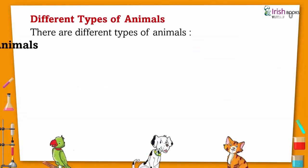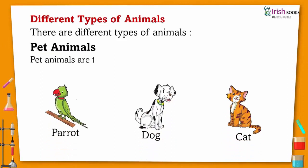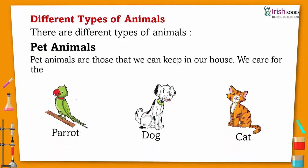There are different types of animals. Pet animals are those that we can keep in our house. We care for them, like parrot, dog, cat.